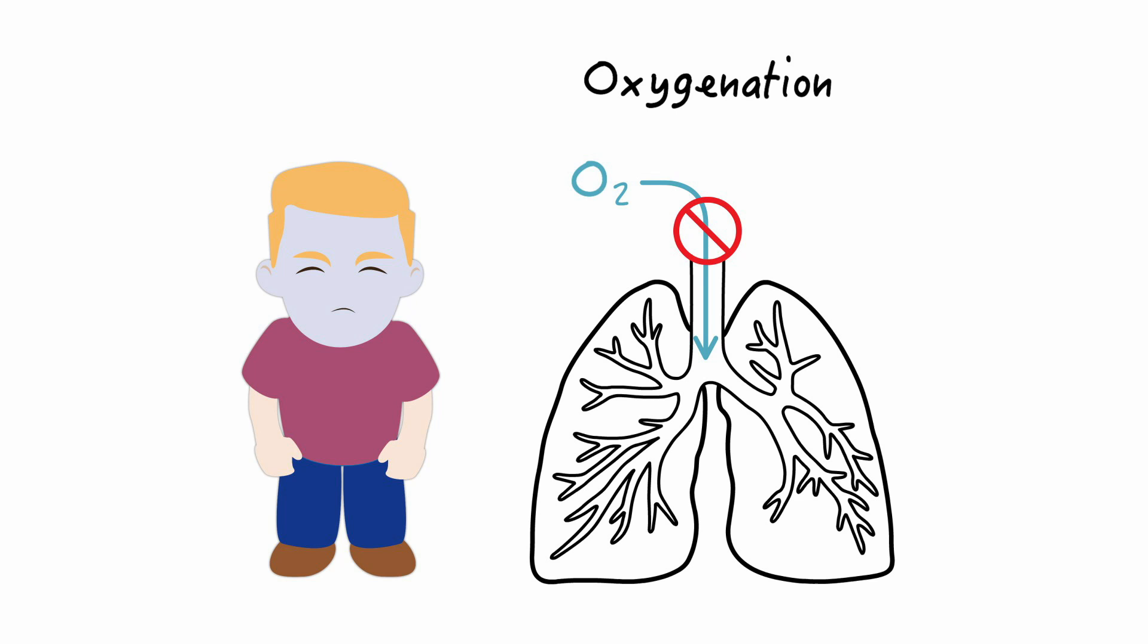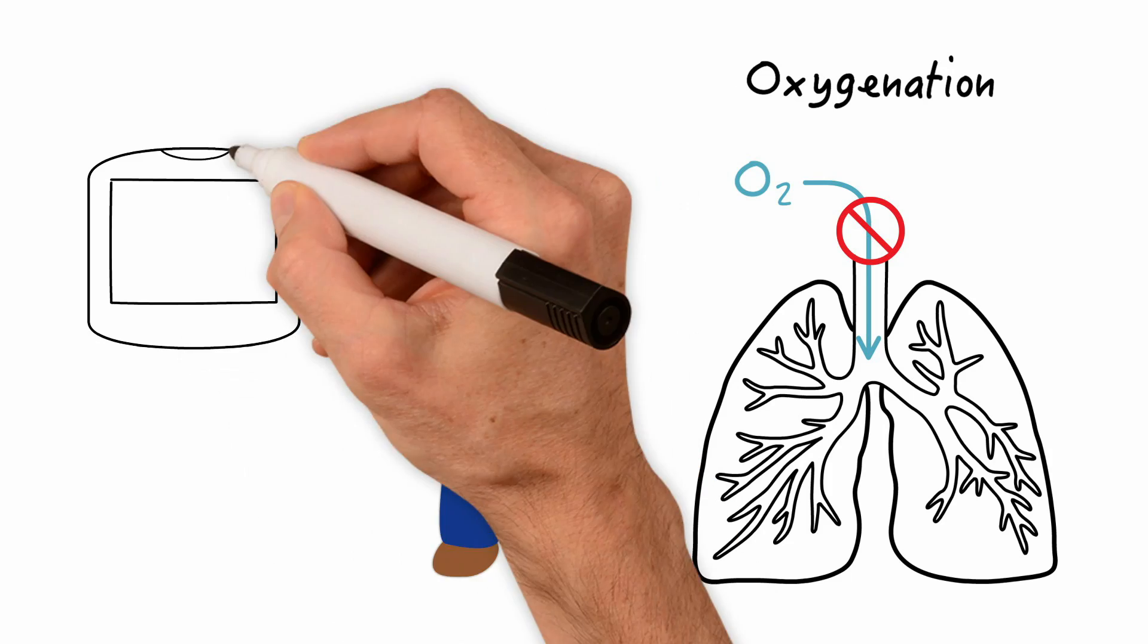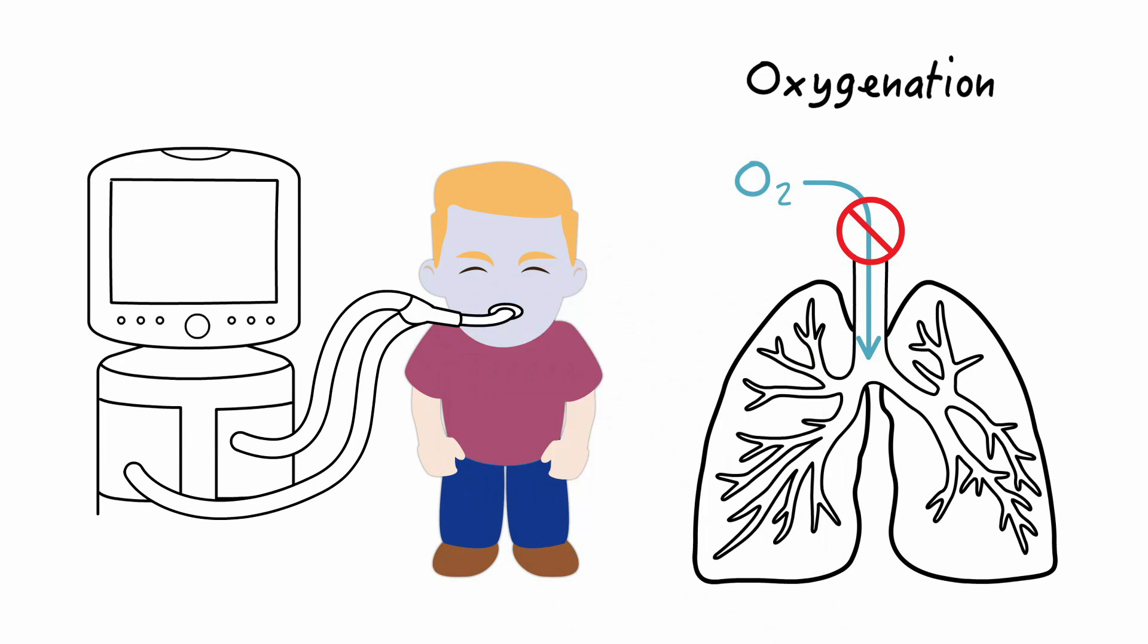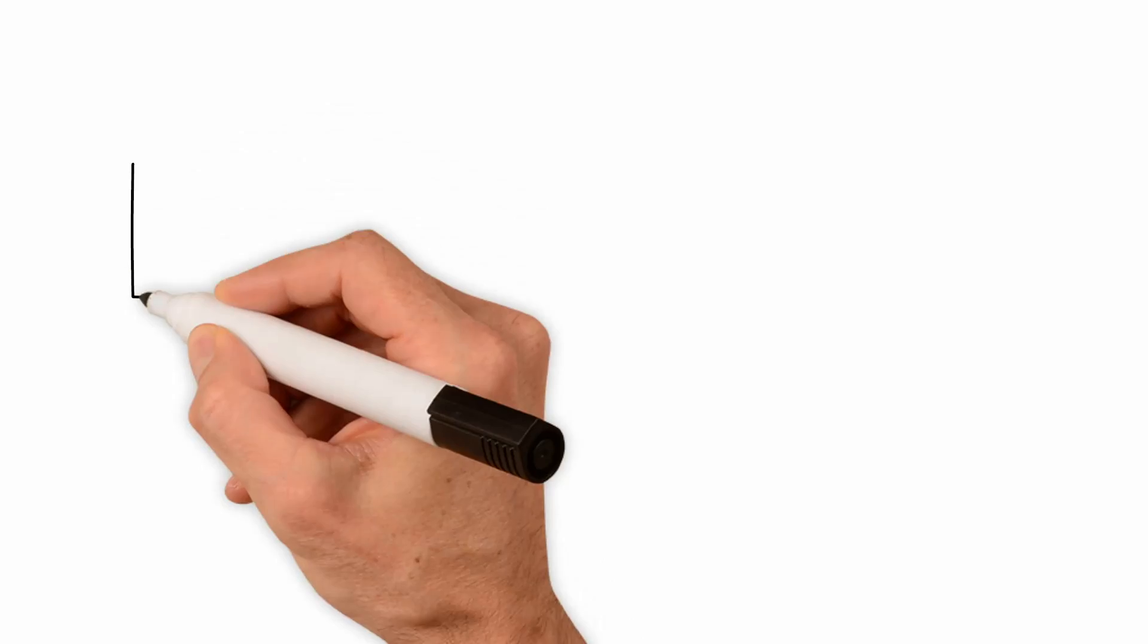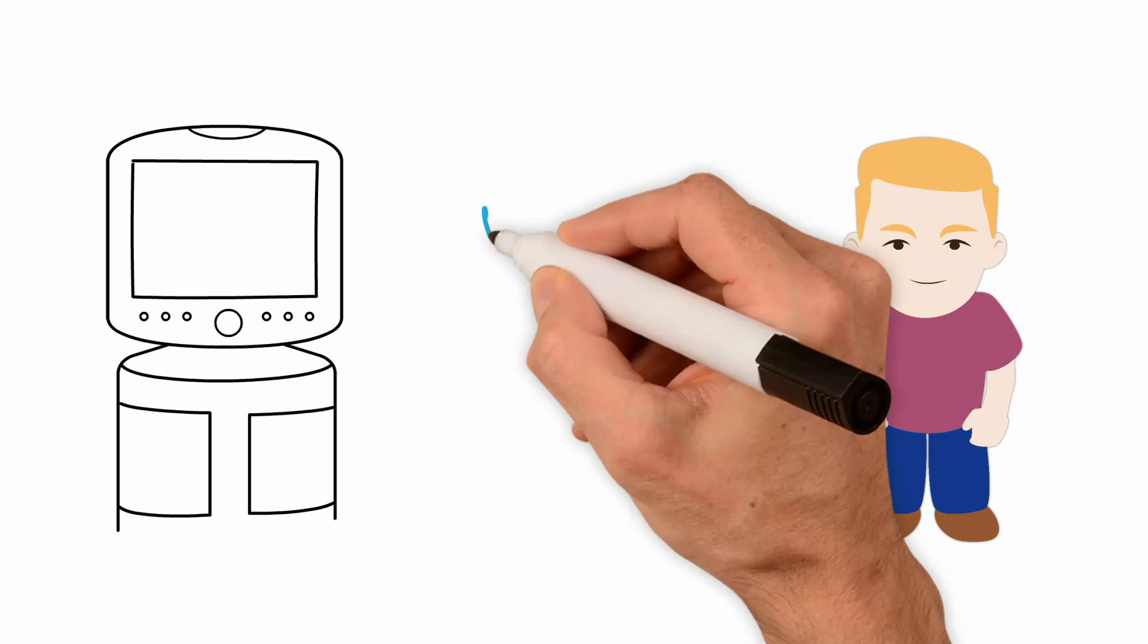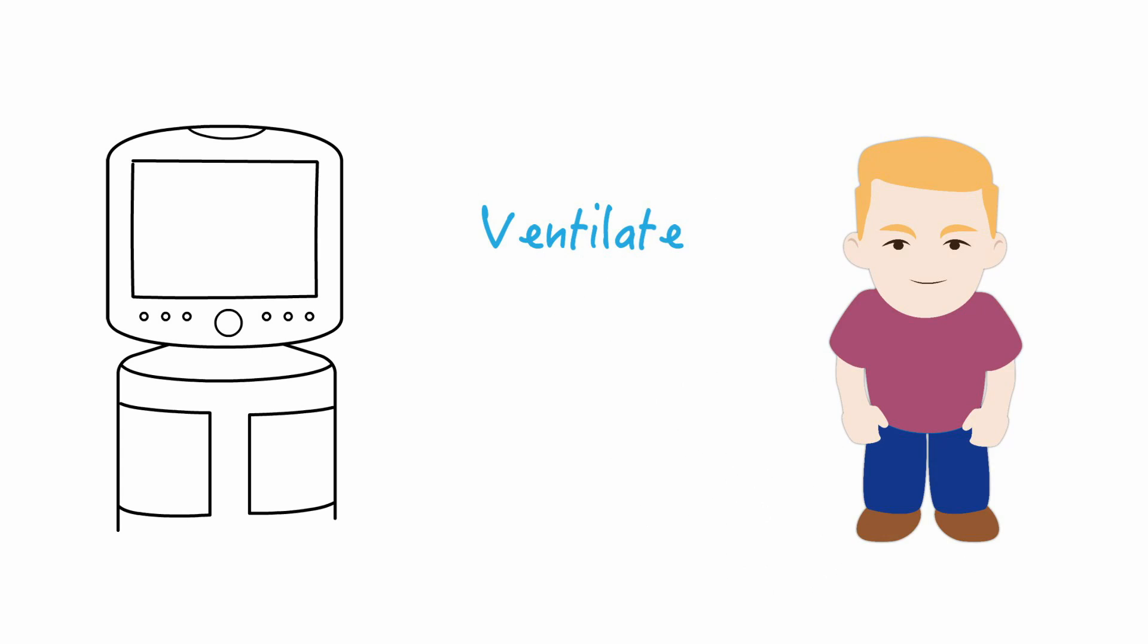In this case, the lungs may need the support of a mechanical ventilator, not because of poor ventilation but because of poor oxygenation. So a mechanical ventilator can help the patient ventilate, get rid of excess CO2, and or oxygenate, get adequate oxygen.